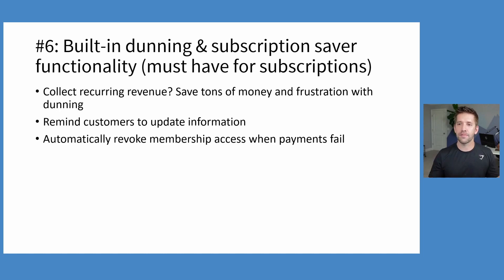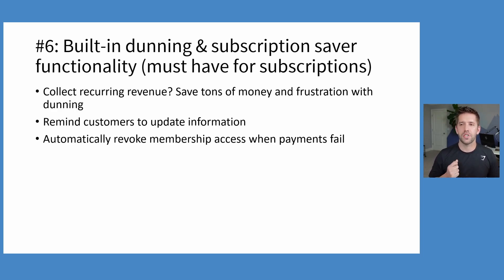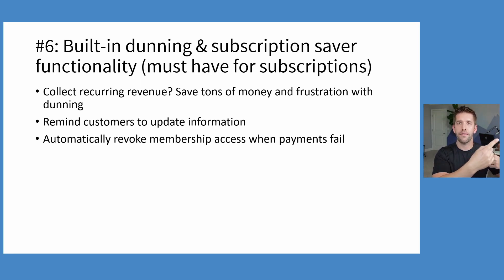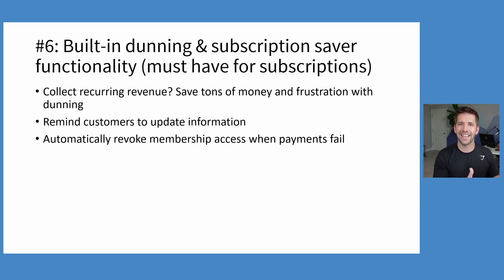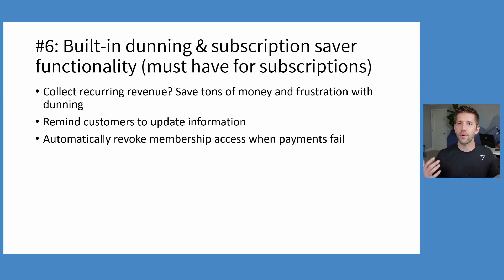Number six: built-in dunning and subscription-saving functionality. If you plan on ever having a membership, recurring revenue, or subscription products, this is a must-have. If you just want to do digital sales or sell a course at a one-time fee, it's a nice-to-have. At a basic level, this means if somebody's credit card expires and their membership is going to rebill, ThriveCart will automatically reach out to the customer and say, "Your credit card is expired — you're going to lose access in X number of days, please update your info." That's configurable in the settings. It can save some money and lets you sleep a little better at night instead of waking up to all these failed rebills.